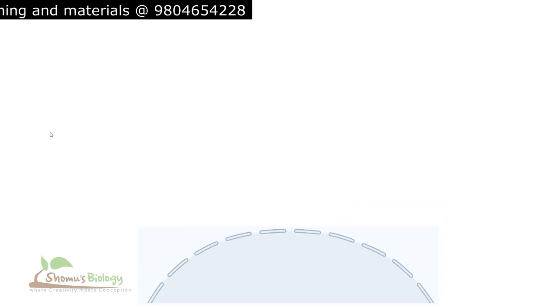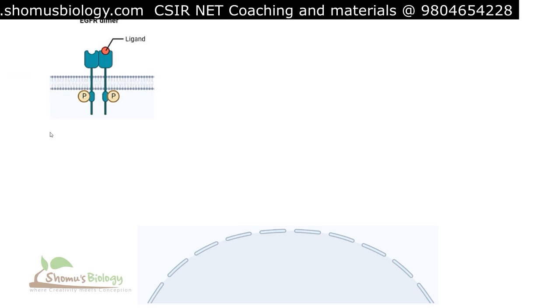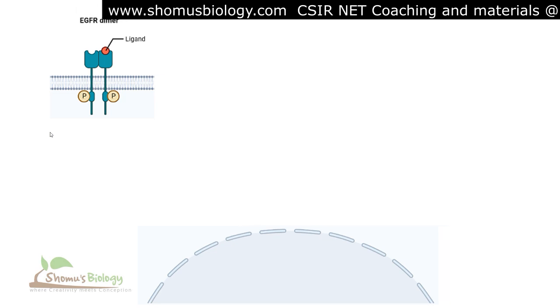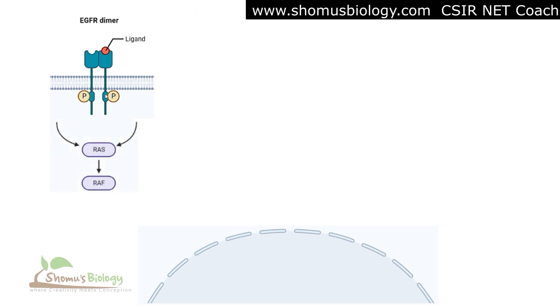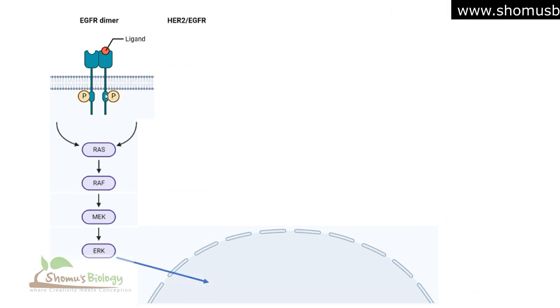In a eukaryotic cell, the process starts with multiple types of receptors on the cell surface. Starting with the EGFR dimer — the epidermal growth factor receptor dimer — once bound to the ligand or epidermal growth factor from outside the cell, it gets phosphorylated at the inner cytosolic site. It then activates the RAS protein, which activates RAF, RAF activates MEK, MEK activates ERK, and finally ERK goes into the nucleus and causes transcription of specific genes that allow the cell to grow and divide.